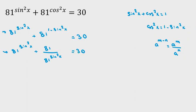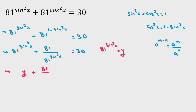Now for the next step, we let 81 to the power of sine squared x equal to y. Then we can conclude y plus 81 over y equals 30.